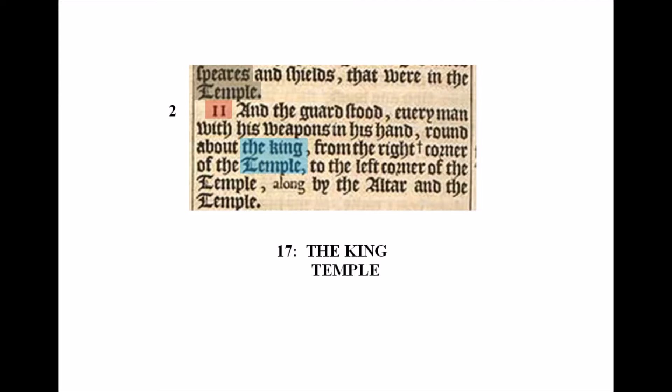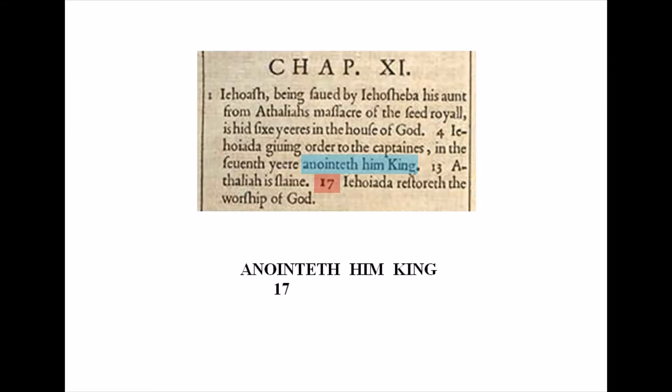And if we interpret the 11 as a 2 and then start counting, word 17 becomes 'the king,' sitting right over the word 'temple.' So the message is: 17, the king, over the temple. Also, looking at the verse reference numbers for chapter 11, it reads 'Anointeth him king,' with the number 17 below 'anointeth.'